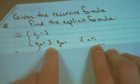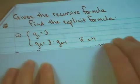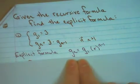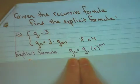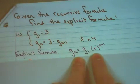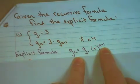Do you remember what this 3 represents? That's right, it's our r value. So the explicit formula again is g sub n is equal to g sub 1 multiplied by r raised to the n minus 1 power.